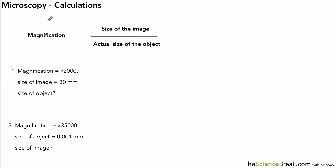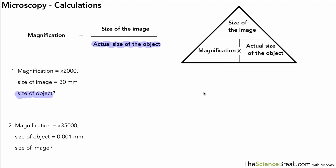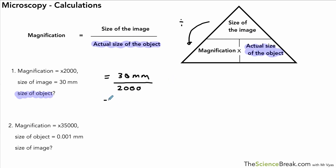Sometimes we're not working out magnification — sometimes we need to work out one of the other parts of the equation. In this case we want to work out the actual size of the object. It might be useful to remember the formula triangle if you're not comfortable rearranging formulas. We need to divide the size of the image by the magnification. The size of the image is 30 millimeters, divided by the magnification of 2000. That gives us an answer of 0.015 millimeters.